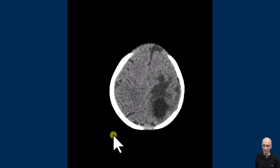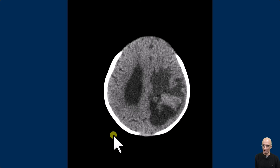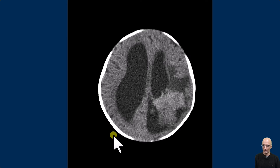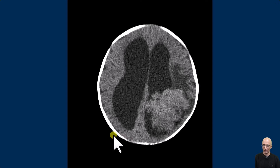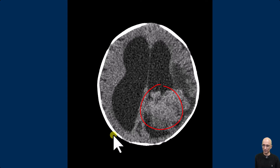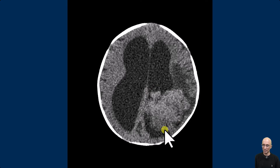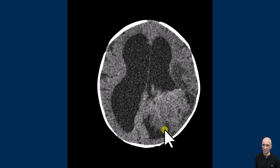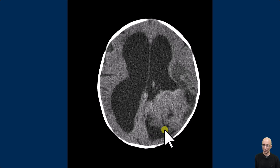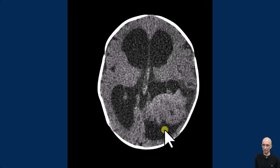I'm going to scroll through the axial images. As you can clearly see, the ventricles are markedly dilated. There is a hyperdense lobulated mass in the atrium of the left lateral ventricle. There is periventricular hypodensity consistent with transependymal CSF flow and edema.